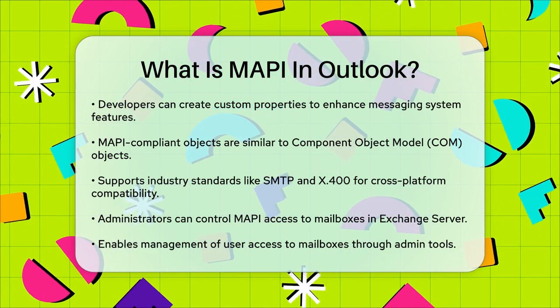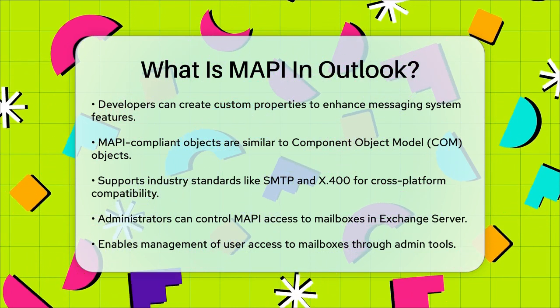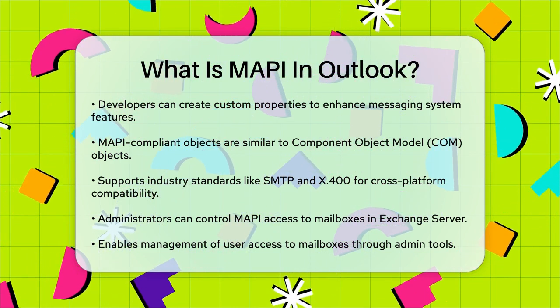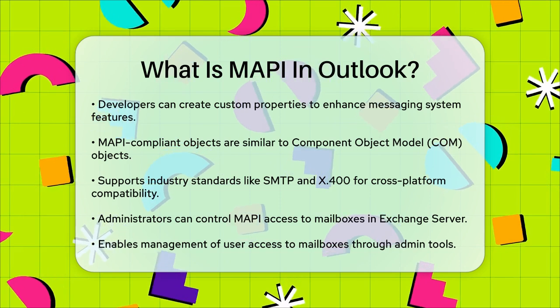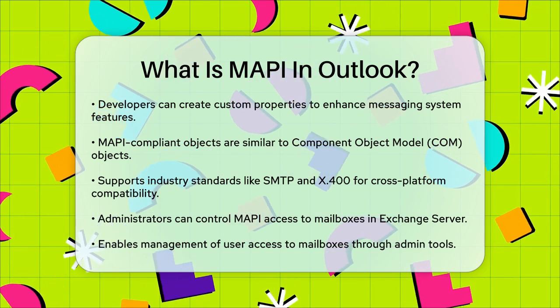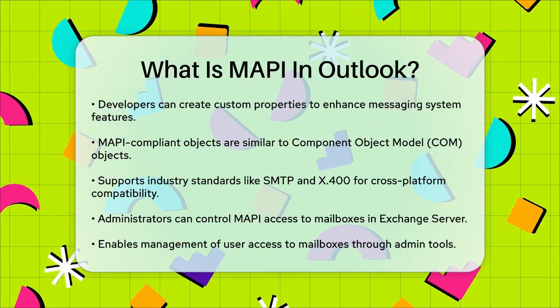In summary, MAPI is the backbone that enables Outlook and other email clients to interact efficiently with various messaging systems, providing a flexible, customizable, and consistent way to manage and exchange information.